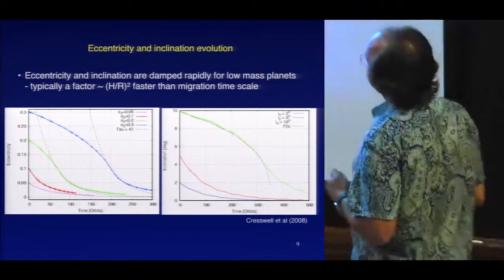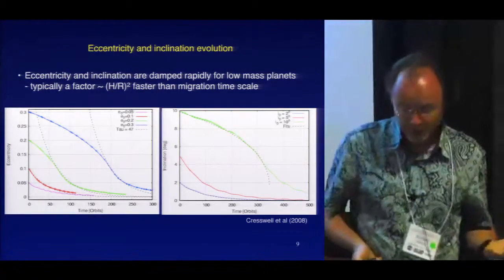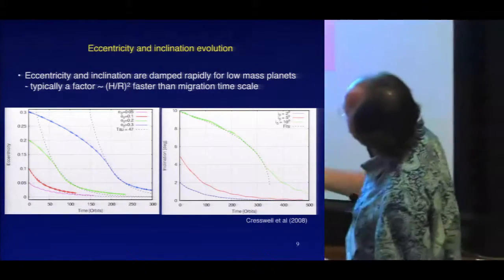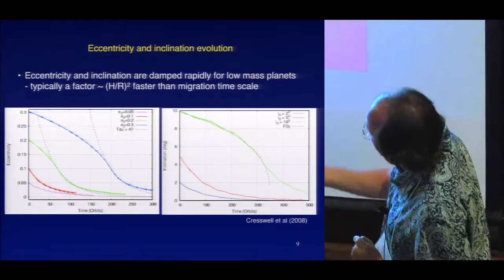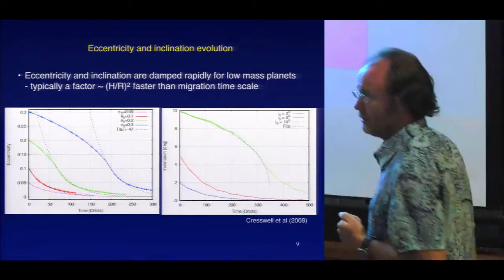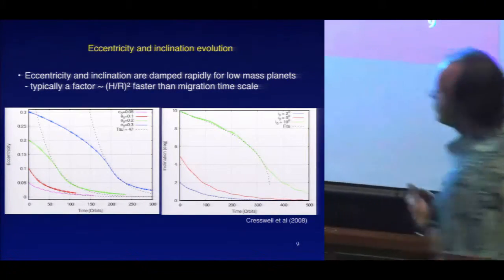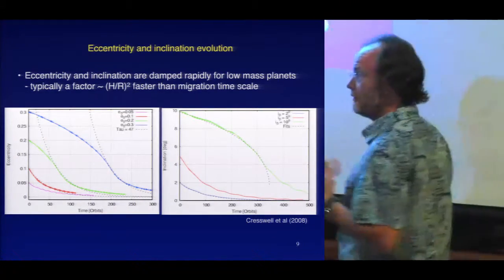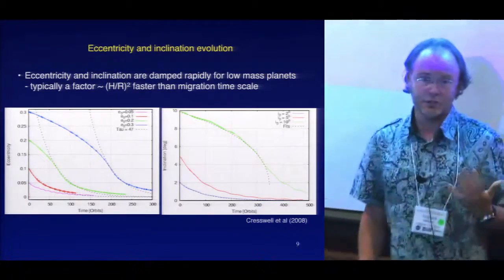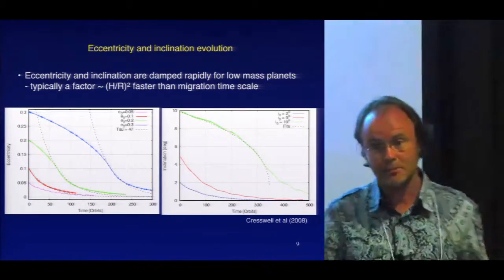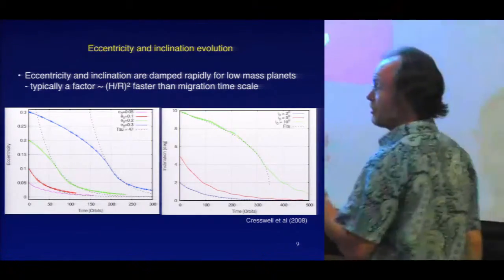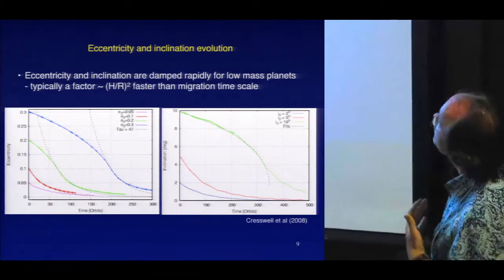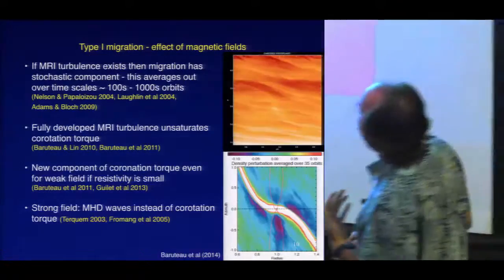If you put a low-mass planet in a disk and it doesn't open a gap, if you allow that planet to be eccentric on its orbit, it will damp very quickly on a timescale of a few tens to up to 100 orbits. Similarly, a low-mass planet on an inclined orbit will also damp its inclination very quickly. So if you see high inclinations or high eccentricities of low-mass planets, that would indicate those were generated after the gas disk has gone away, because the gas disk is very efficient at damping out inclinations and eccentricities.